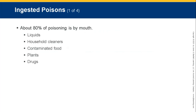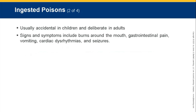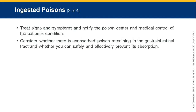About 80% of poisoning is by mouth. It includes liquids, household cleaners, contaminated food, plants, and drugs — usually accidental in children and deliberate in adults. Signs and symptoms include burns around the mouth, gastrointestinal pain, vomiting, cardiac dysrhythmias, and seizures. Treat signs and symptoms and notify the poison center and medical control. Consider whether there is unabsorbed poison remaining in the gastrointestinal tract and whether you can safely prevent its absorption.